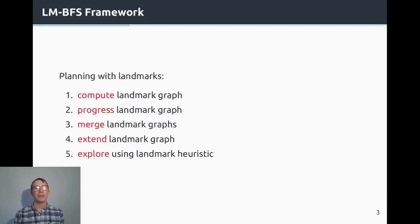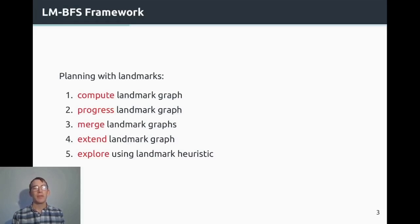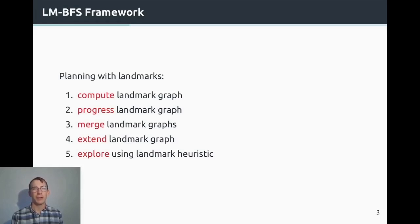Computing the landmark graph is only one of the components we have established in our landmark framework. The second, third, and fourth — progressing, merging, and extending the landmark graph — all have to do with updating information based on transitions between different states during search. The fifth is exploring the state space, which we usually do using some kind of landmark heuristic.